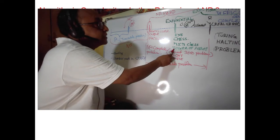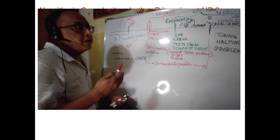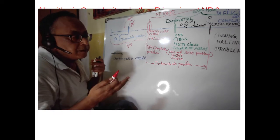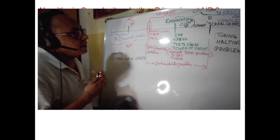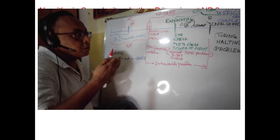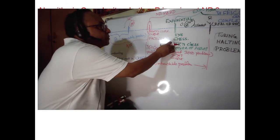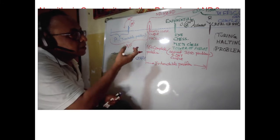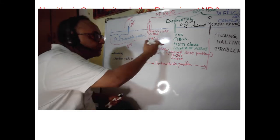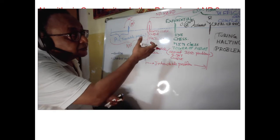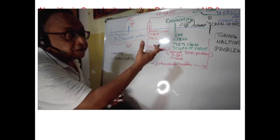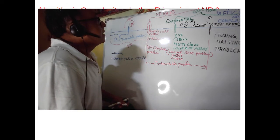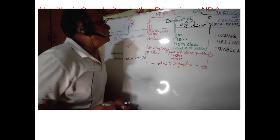Another exponential problem that cannot be simplified is the Tower of Hanoi. If you have 3 disks, 2³ − 1 movements are required; for 4 disks, 2⁴ − 1. This is a typical exponential problem — you cannot make it a polynomial reduction. Verification of Tower of Hanoi is easy, but chess is not so easy.